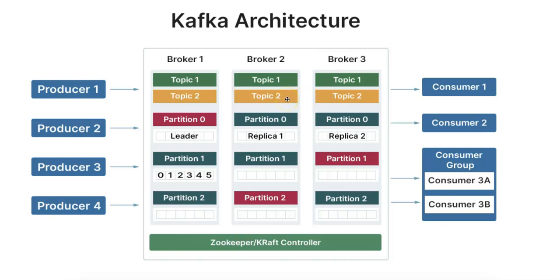There's also the concept of offset. The offset is a unique identifier for each message within a single partition. Consumers use the offset to keep track of where they left off in reading data from a partition. Kafka does not remove messages once they are consumed. Instead, consumers keep track of their current position given by the offset — the unique ID for a message within a partition.